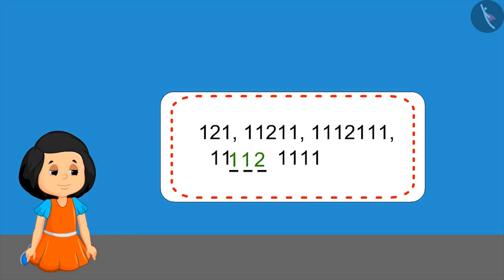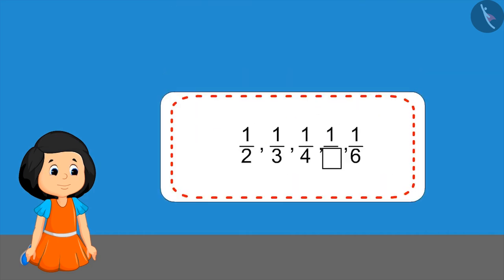Now let's look at the next pattern. Muni has written this. Is it right? Come, let's find out the rule of this pattern. First, you can see that the numerator of each fraction is same, but the denominator is increasing continuously, like two, three, four, then five, and then six will come. So Muni has given the right answer.